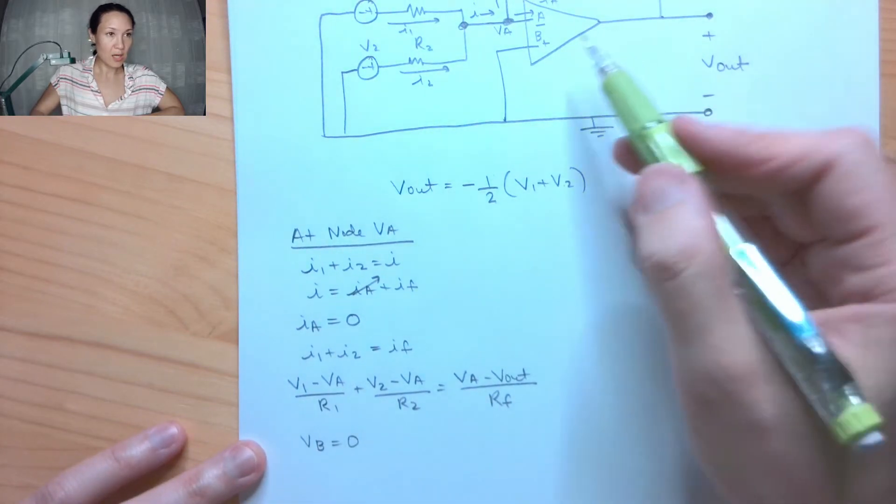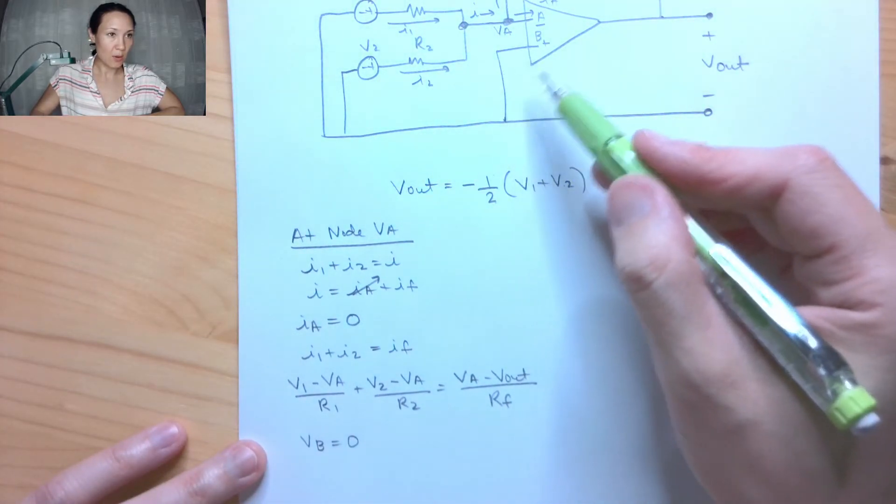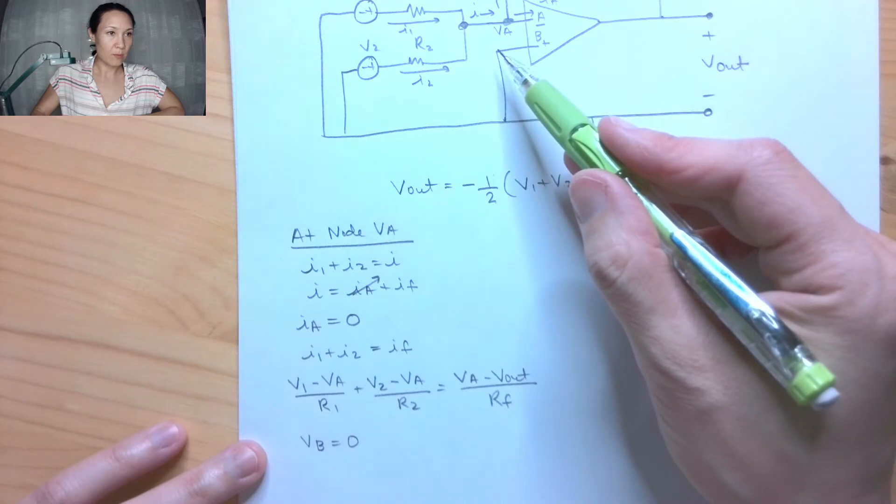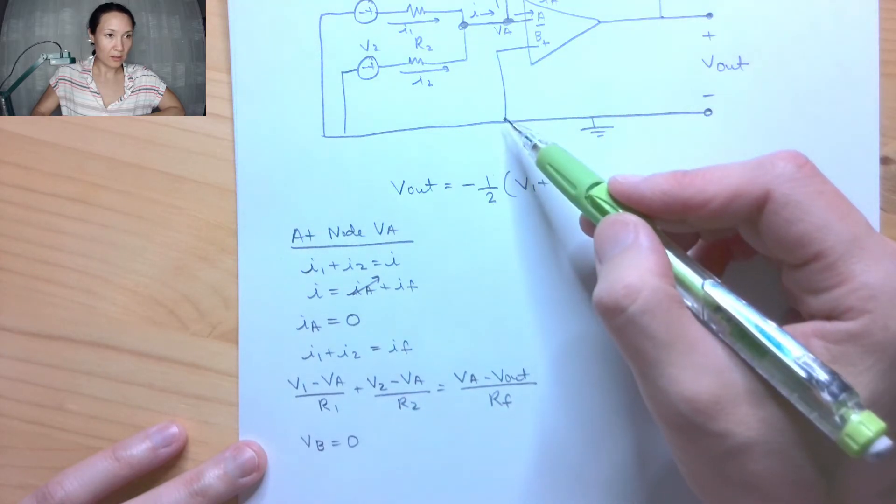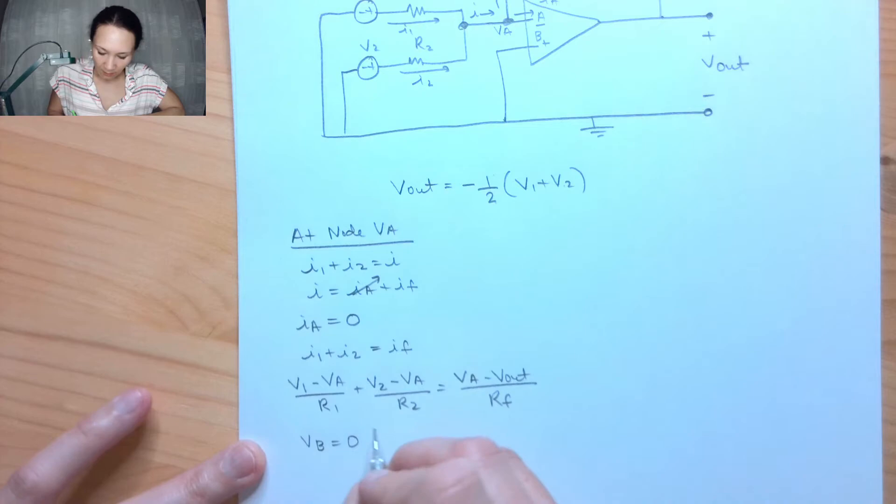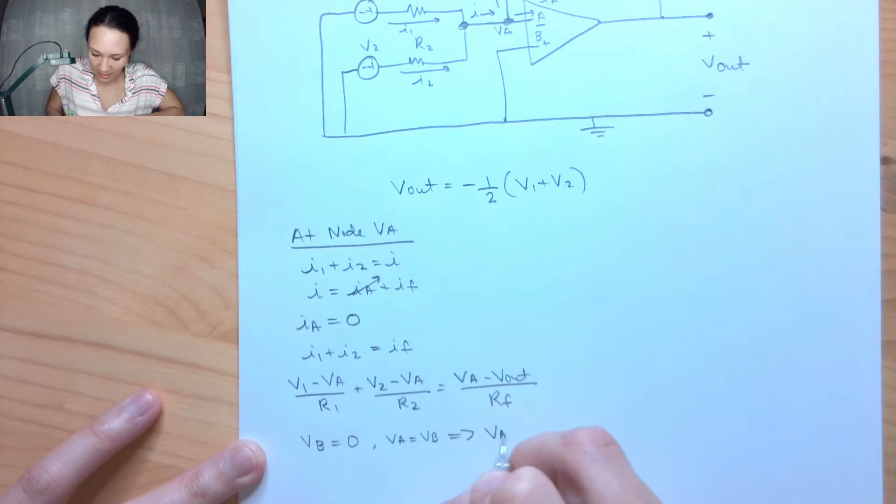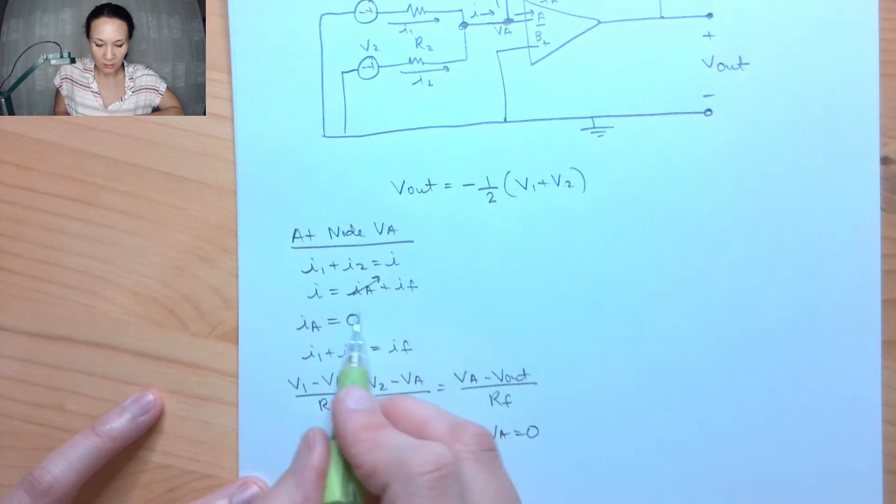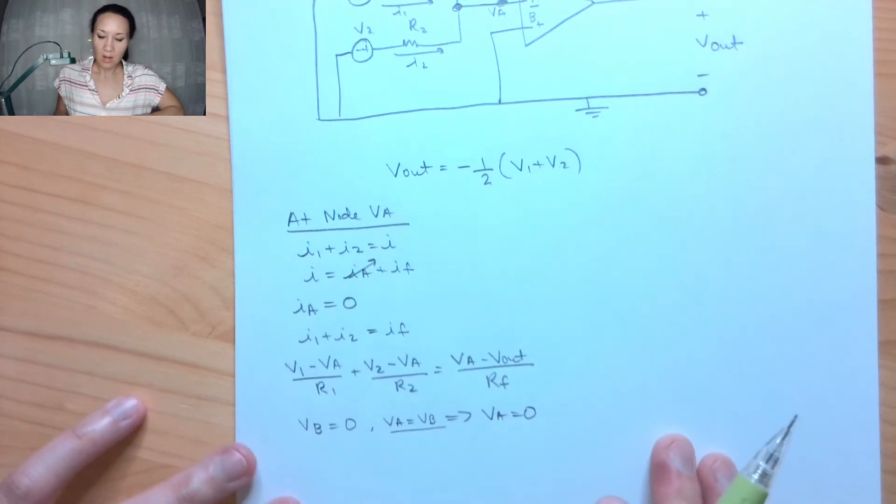So that means that VB is equal to zero, right? The voltage at this node here is zero, since this is connected by a wire directly to the ground node. And because of the ideal op-amp approximation, I have that VA is equal to VB, which implies that VA is equal to zero. So I know this because of the ideal op-amp approximation. That's also why I get to say this.